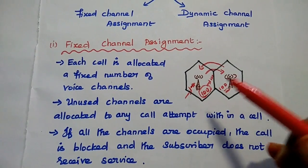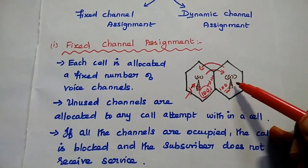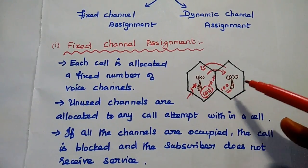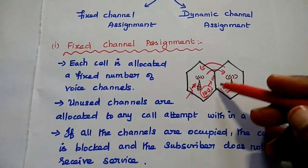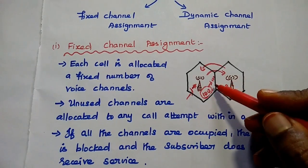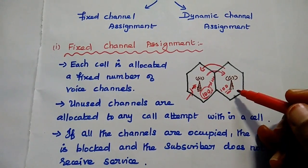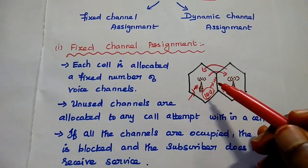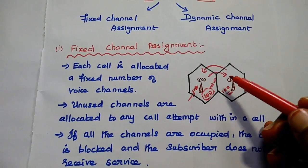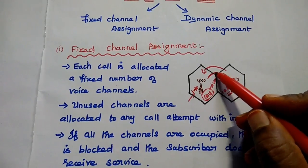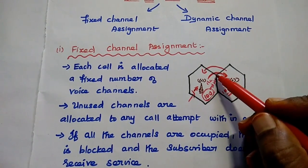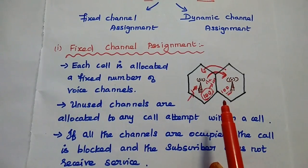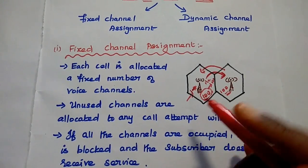That is called the borrowing strategy. In this method, a cell is allowed to borrow channels from its neighboring cell. One condition is that the borrowed channel must not interfere with the progress in the neighboring cell — if it is free, we can use it; otherwise, we should not disturb the neighboring cell. The cell which is donating the channel is called the donor cell, and the cell which is accepting the channel is called the acceptor cell. This borrowing strategy can be monitored and supervised by the MSC.